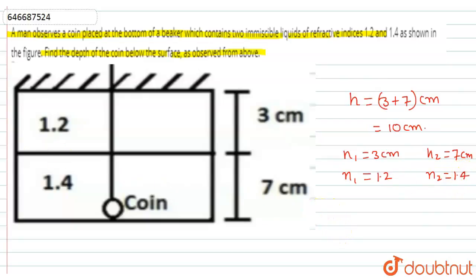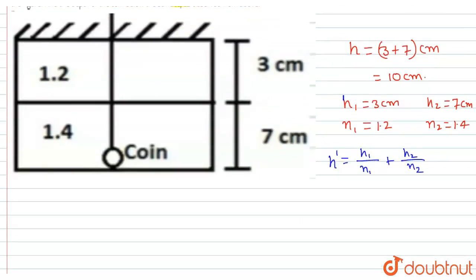Let h' be the apparent depth. Then h' equals h1 divided by n1 plus h2 divided by n2.